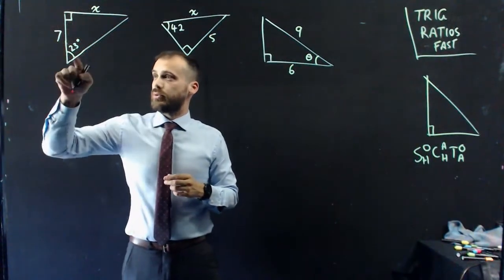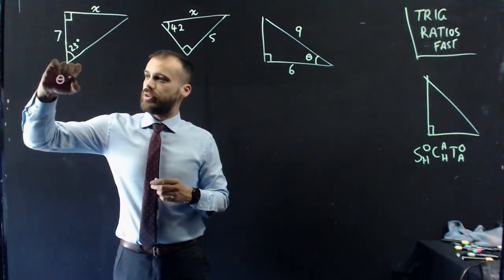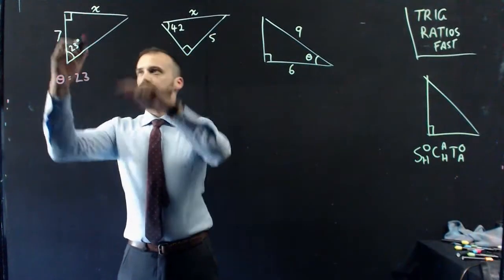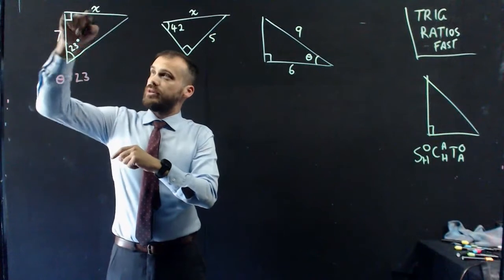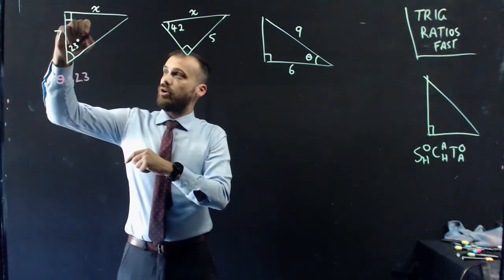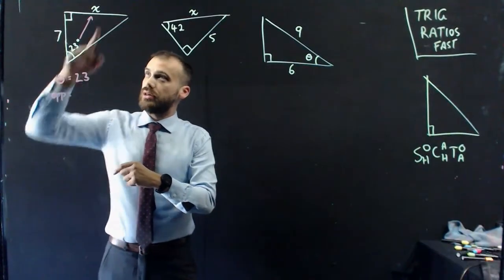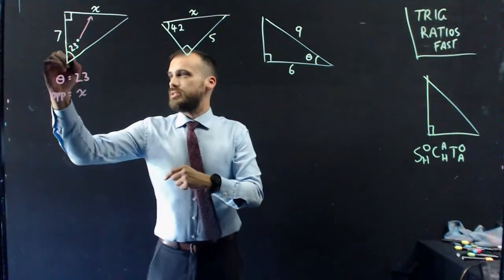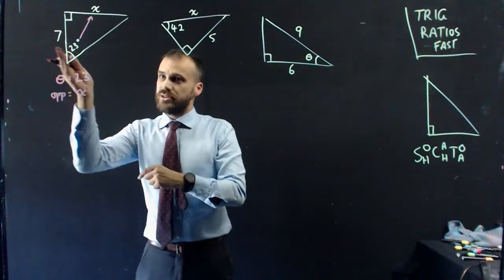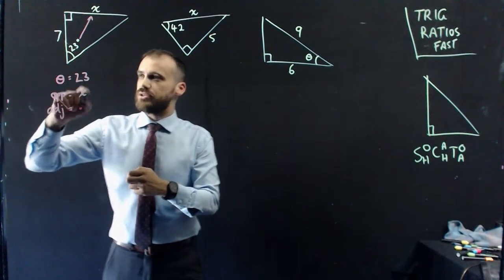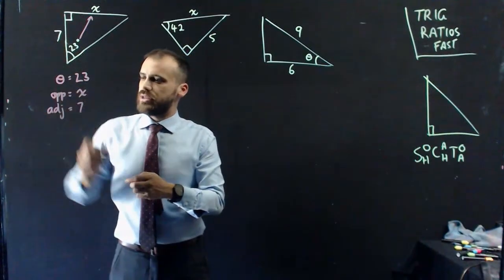This is a right angle. We've got theta here. We know that theta is equal to 23. Now, this is the hypotenuse, because it's opposite the right angle. This side here is the opposite side to the angle, so we can say that opposite equals x. And this side is the side next to the angle that isn't the hypotenuse, so we call that adjacent. Adjacent means next to. So 7.